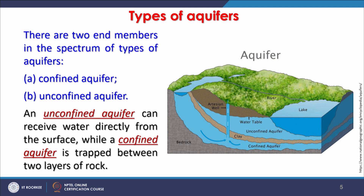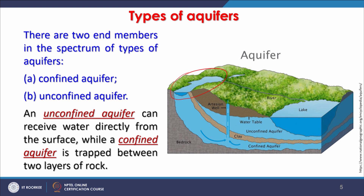An aquifer which is open and directly receives rainwater is unconfined. Most aquifers, especially in hard rock terrain in India, are unconfined aquifers, which is why wells go dry in the summer or dry season. If those were confined aquifers, we might have water throughout the year because recharging takes place — as shown in this figure — to the confined aquifer. With unconfined aquifers there is no impervious layer above, so that part may go dry.